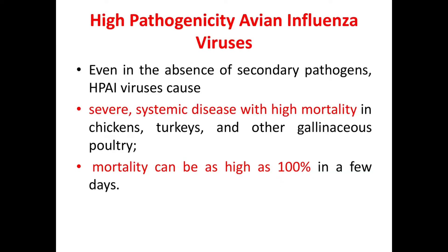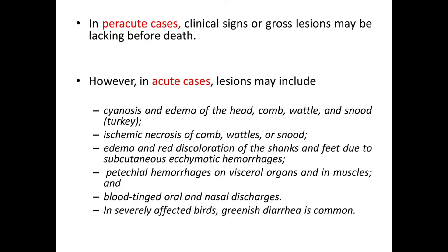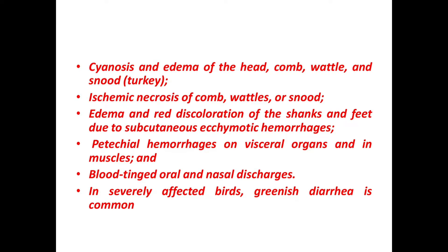In HPAI, even in the absence of secondary pathogens, severe systemic disease with high mortality occurs in chickens, turkeys, and other gallinaceous poultry — mortality can be as high as 100% in a few days. In peracute cases, clinical signs or gross lesions may be lacking before death. In acute cases, lesions include cyanosis and edema of the head, comb, wattles, and snood in turkeys; ischemic necrosis of comb, wattles, or snood; edema and red discoloration of shanks and feet due to subcutaneous ecchymotic hemorrhages; petechial hemorrhages on visceral organs and muscles; blood-tinged oral and nasal discharges; and greenish diarrhea.